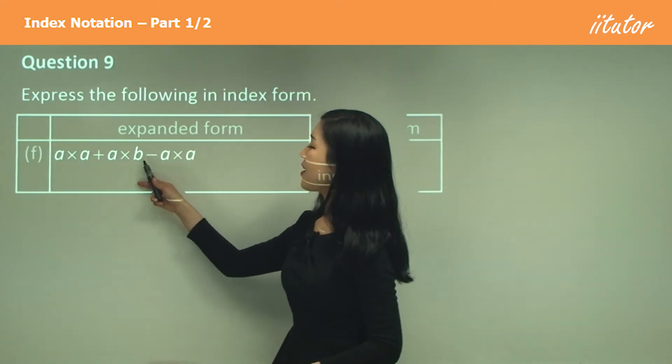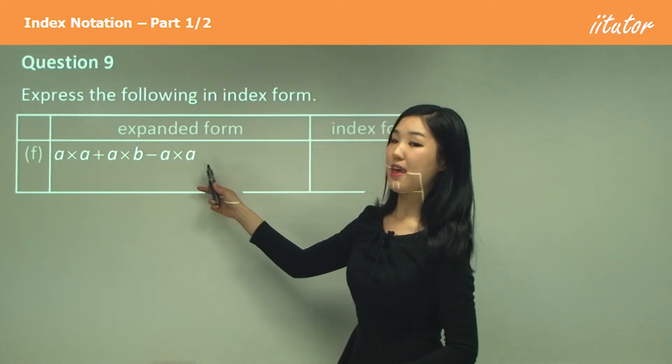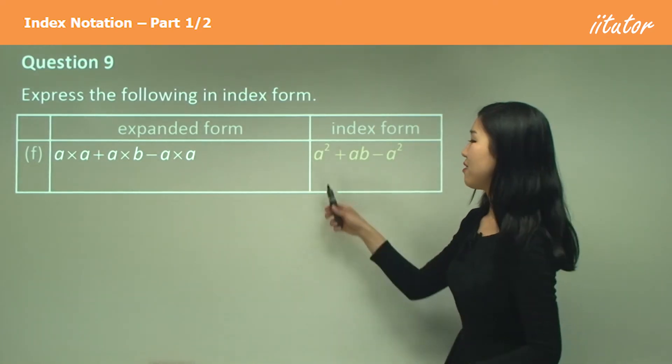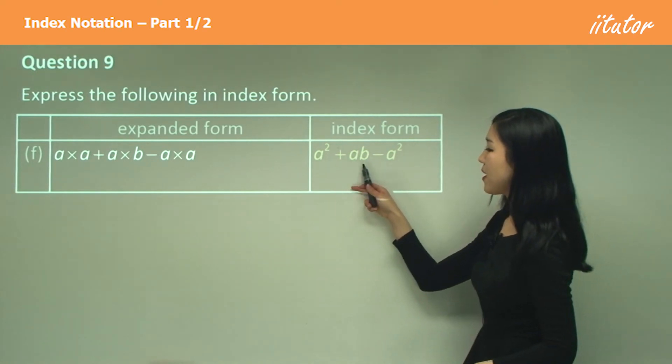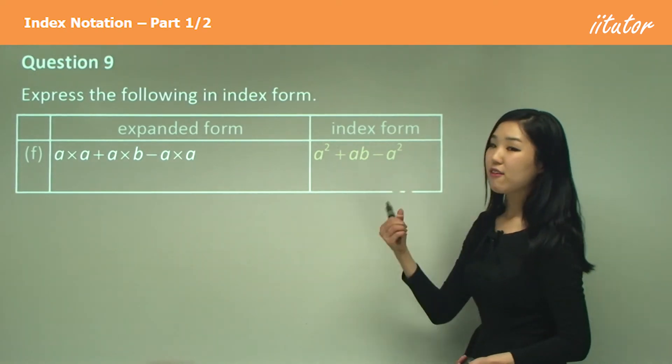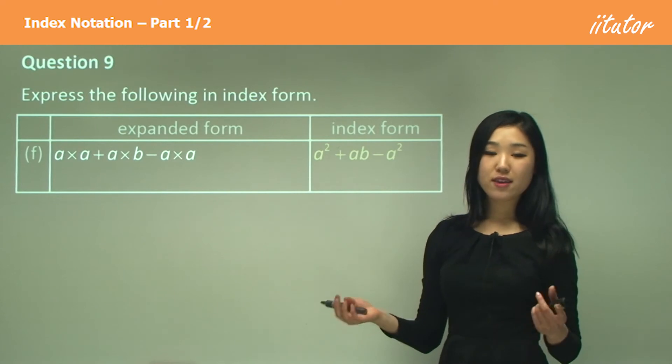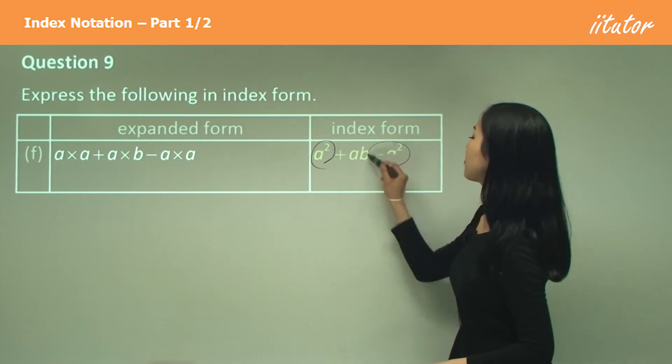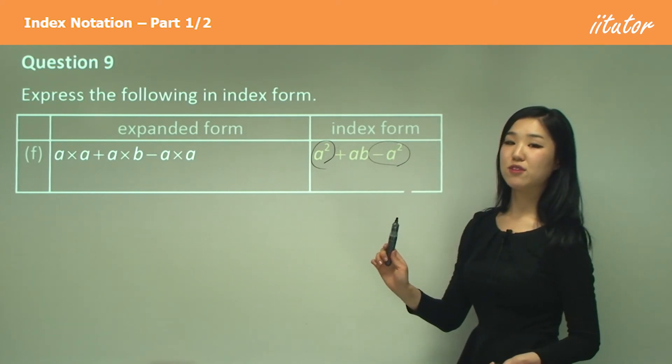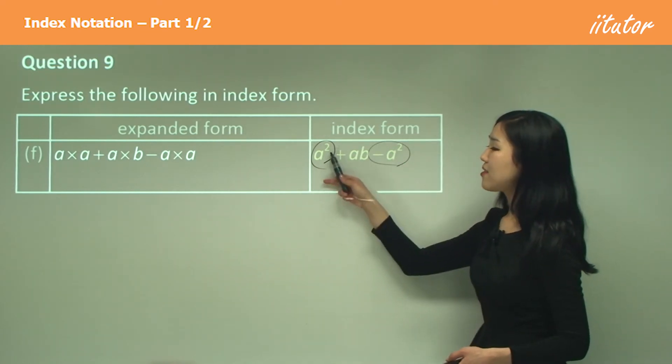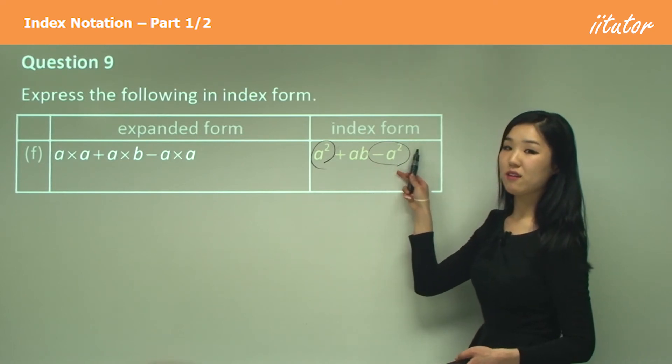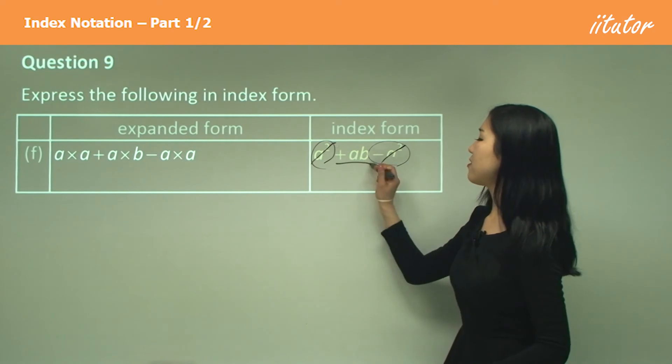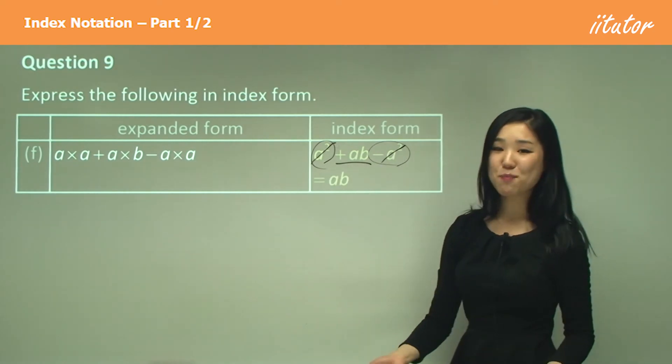a times a plus a times b minus a times a. I'll just actually show you. You guys should be okay with this now. We've got two a's, we've got a and b and we've got two a's. Now remember guys, I said gather your like terms if you do have any. See how a squared and a squared here? They're like terms. So we can gather them. So what's a squared minus a squared? Zero. So we actually eliminate these.